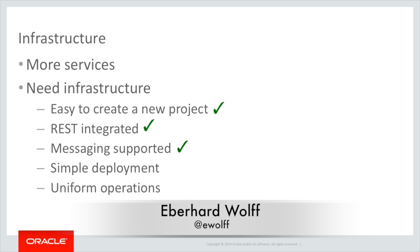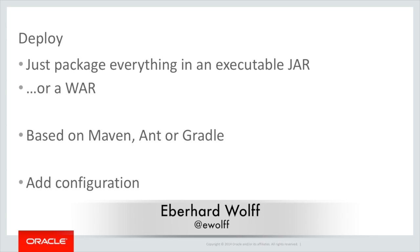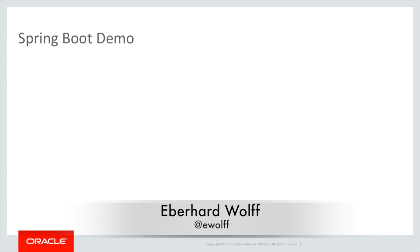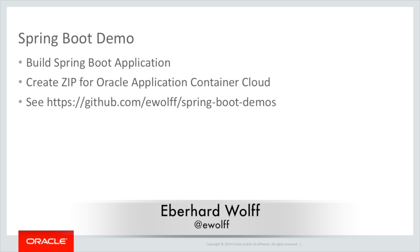So we need to talk about deployment. What you do is you just package everything in one executable JAR file or WAR file using Maven, Ant, or Gradle. You can add some configuration to it - there are quite a few options. For example, you can have an application.properties file that gives some configuration in your JAR file, or you can have it on your server. What I want to show now is a demo of how such a Spring Boot application can be built and how you can create a ZIP for the Oracle Application Container Cloud - an infrastructure that allows you to run Java SE-based applications on a platform as a service. The demo code is on my GitHub account, so feel free to look at it.